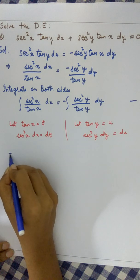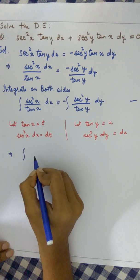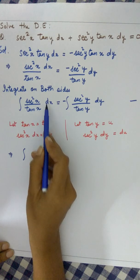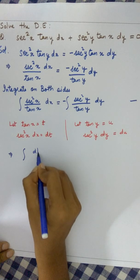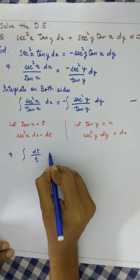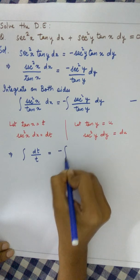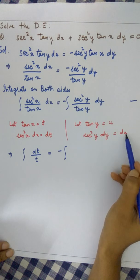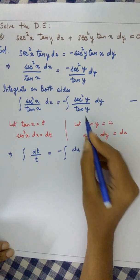We get the integral of dt over t equals minus the integral of du over u.